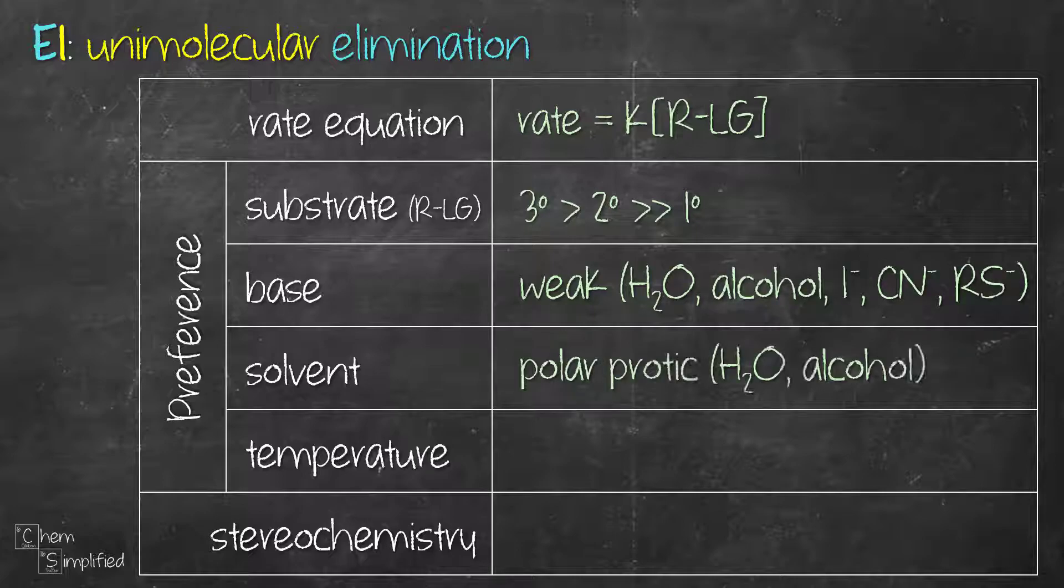Polar protic solvent like water and alcohols will favor E1. Polar protic solvent contains hydrogen atom that's connected to an electronegative atom like nitrogen, oxygen, and fluorine and it's capable of hydrogen bonding. So therefore it's going to help to stabilize the carbocation intermediate.